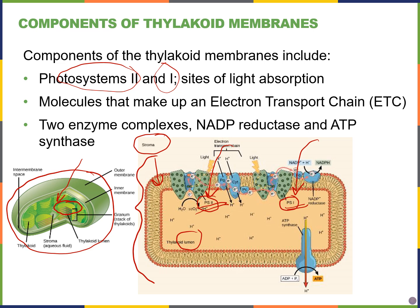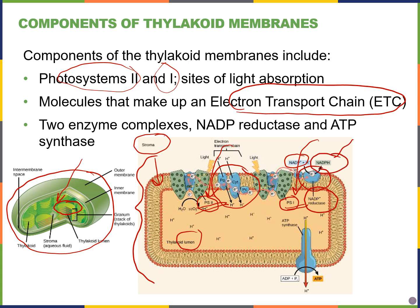Just like in chapter 7 for cellular respiration and the metabolism of glucose, we're also going to have an electron transport chain in photosynthesis. There are two enzyme complexes embedded in the thylakoid membrane. One is called NADP reductase, which takes NADP+ — the oxidized version — and turns it into the reduced version, NADPH. We also see ATP synthase, which uses energy from an electrochemical gradient to generate ATP.